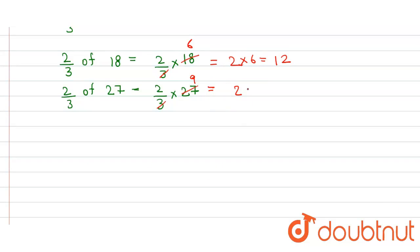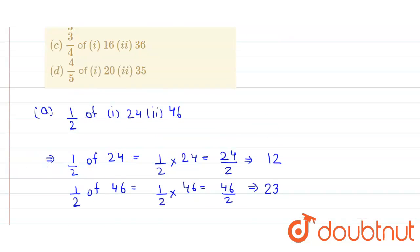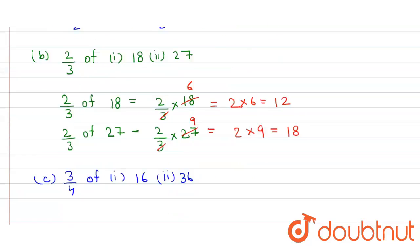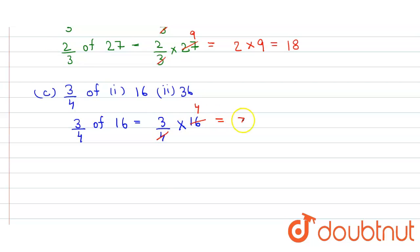The C part is 3/4 of 16 and 36. So 3/4 of 16 equals 3/4 into 16. This 4 cancels with 16 and here we get 4, so that will be equals to 3 into 4, which equals 12.